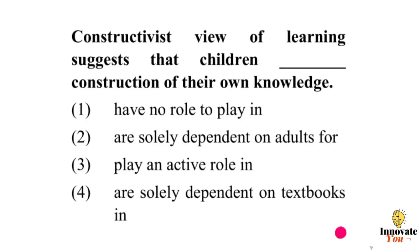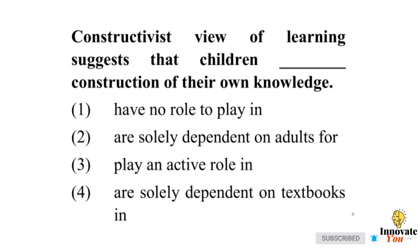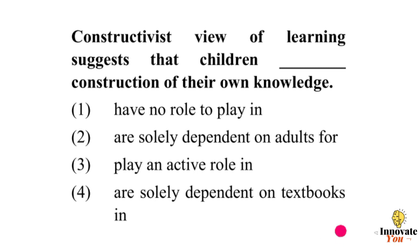Question 5: Constructivist view of learning suggests that children — Option 1: [blank] construction of their own knowledge. Option 2: Have no role to play in. Option 3: Are solely dependent on adults. Option 4: Play an active role in. Option 5: Are solely dependent on textbooks. Answer: Play an active role in construction of their own knowledge.